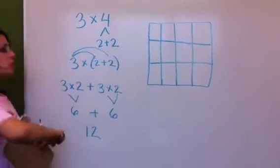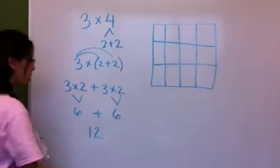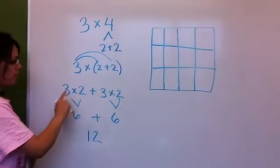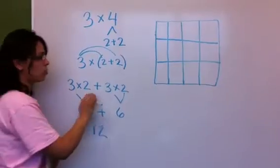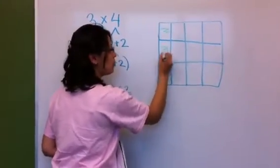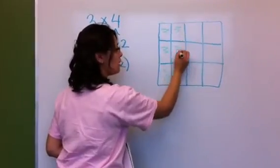To show the distributive property with a picture, you would have 3 rows with 2 green in each row.